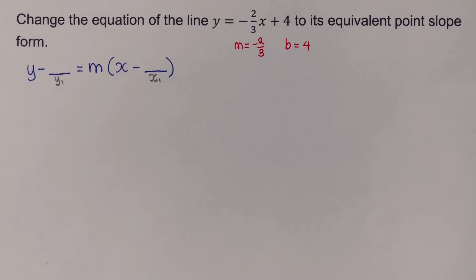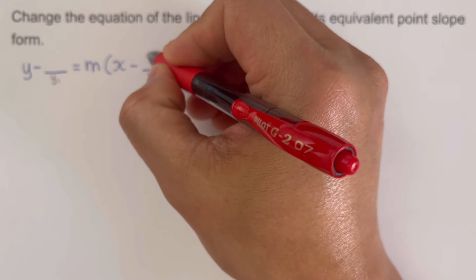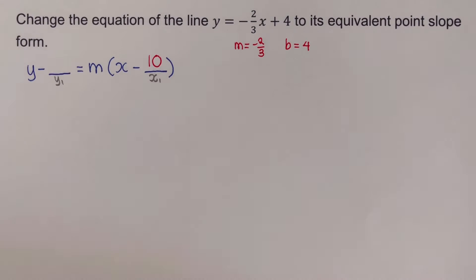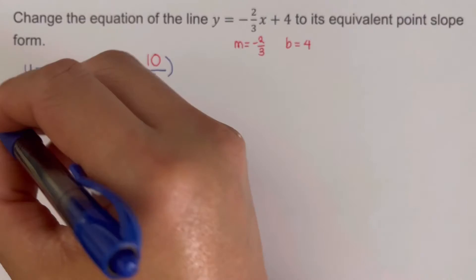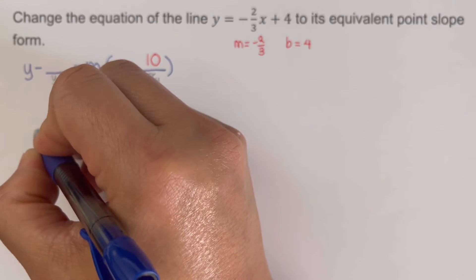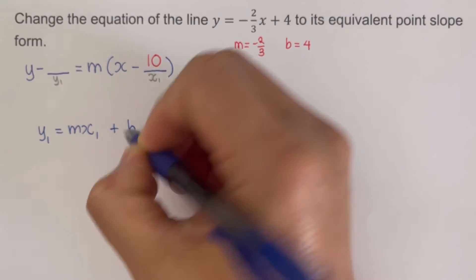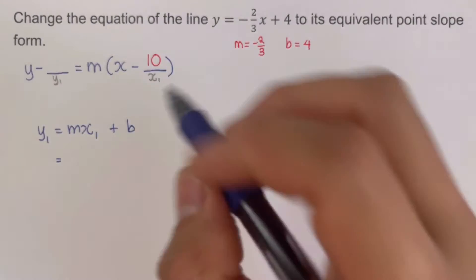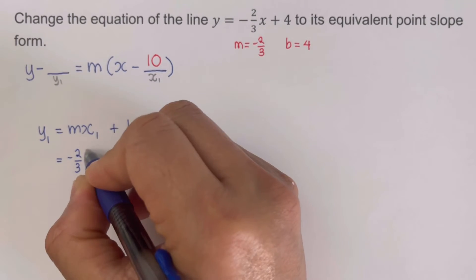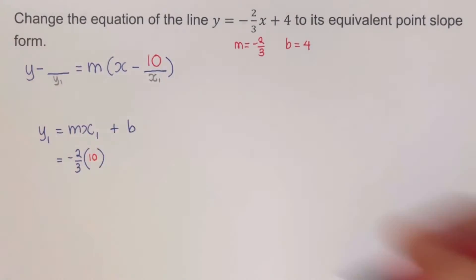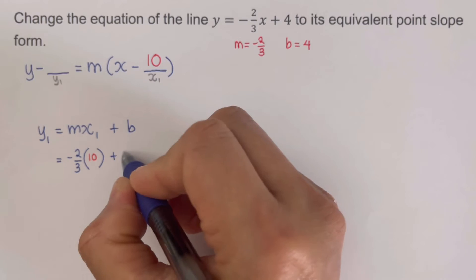Let's pick a value for x sub 1 — let's say x sub 1 is 10. You can pick any number. To find y sub 1, we use the equation y sub 1 equals m times x sub 1 plus b. Plugging in: our slope m is negative 2 over 3, x sub 1 is 10, and b is 4, giving us negative 2 over 3 times 10 plus 4.